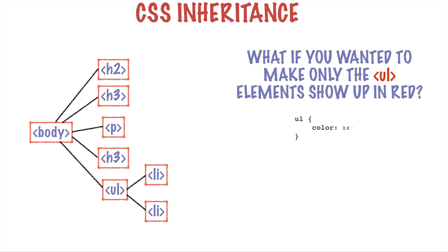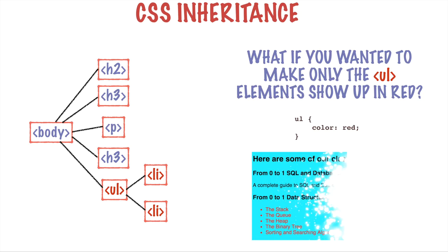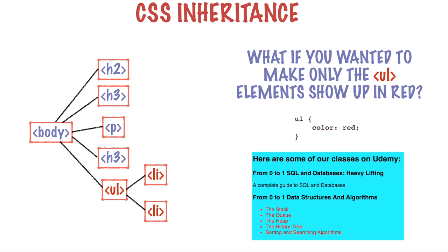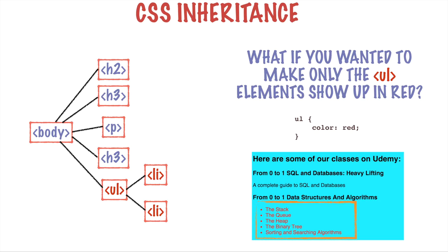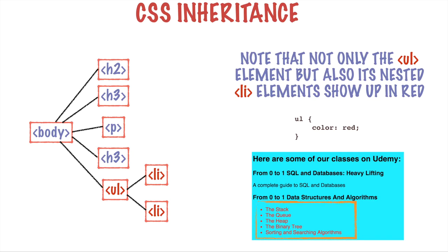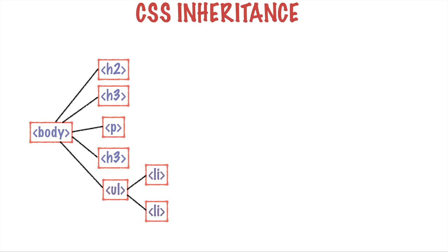What if we wanted to make only the unordered list elements show up in red? We would create a new style — the selector would be ul — and it would say that the property color should be set to the value red. This would apply to the unordered list element as well as all of the nested elements beneath it, i.e., the li list element bits of the HTML. The unordered list and all of the list elements now show up in red, not just the ul element alone.